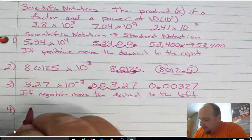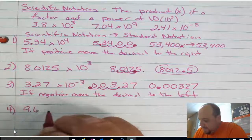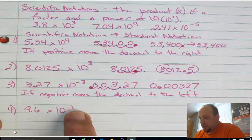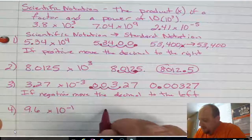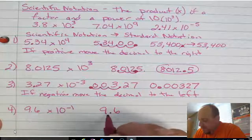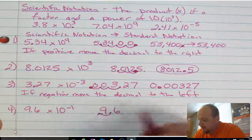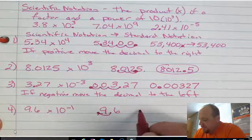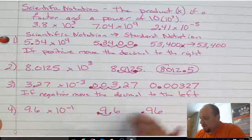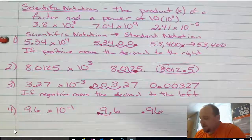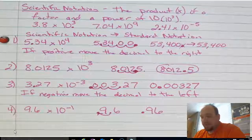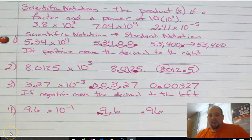Example number four: 9.6 times 10 to the negative one power. Again, it's a negative power, so we move the decimal to the left. I rewrite 9.6 and move the decimal one spot to the left, placing it right here. As a result, I end up with 0.96, or 96 hundredths. That's the way our number system works. Good luck with your practice problems.